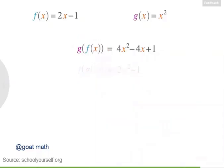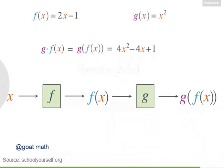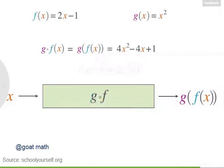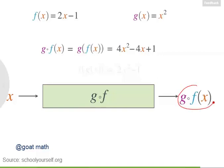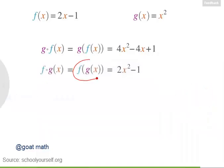Another way to write g of f of x is with a circle between the g and the f. You can read this aloud as 'g composed with f of x,' where g composed with f is a new function. When we applied these functions, we took x, put it into f to get f of x, and then put f of x into g to get g of f of x. But we can also think of this as one big function — you put in an x, and you get out some function of x. This function that turns x into g of f of x is g composed with f. Similarly, another way to write f of g of x is f composed with g of x.